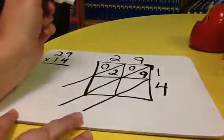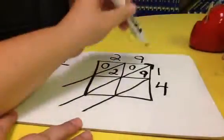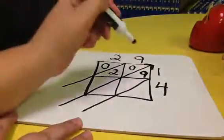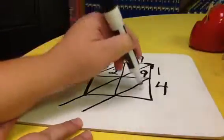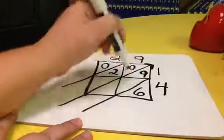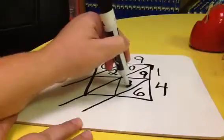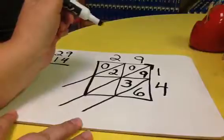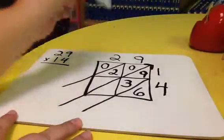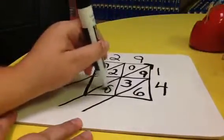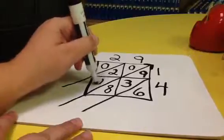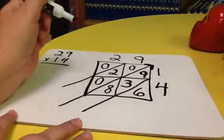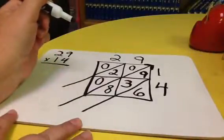For 4 times 9 is 36, so we have 6 in our ones column and we have 3 groups of 10 in our tens column for 36. 4 times 2 is 8. We have 8 in our ones column and then nothing in our tens column.